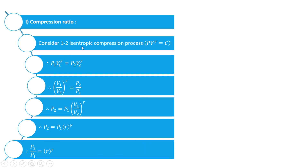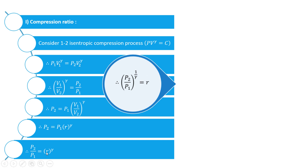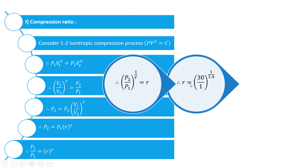Consider the 1 to 2 isentropic compression process. The law followed is PV raised to gamma equals constant. Applying this to state points 1 and 2: P1 V1^γ = P2 V2^γ. Rearranging, (V1/V2)^γ = P2/P1, so P2 = P1 × R^γ. Solving for R: R equals (P2/P1) raised to 1/γ, which is (30/1)^(1/1.4), giving a compression ratio R of 11.352.